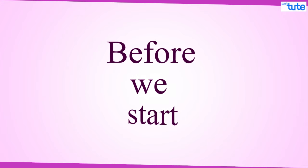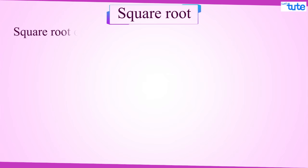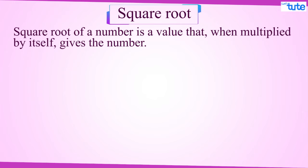But before we start, let's just have a look to see what is the meaning of finding the square root of a number. So square root of a number is the value that when multiplied by itself gives the number. Like for example, 3 times 3 is equal to 9. So the square root of 9 is 3.